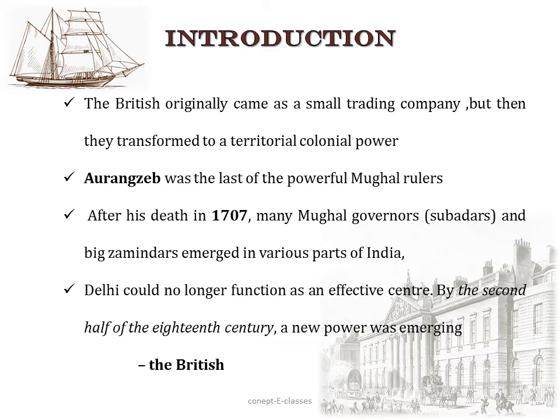The name of this chapter is From Trade to Territory. What we are going to study is how the Britishers came as a small trading company and how they transformed into a territorial colonial power — that is, how they became the rulers of the Indian territory.